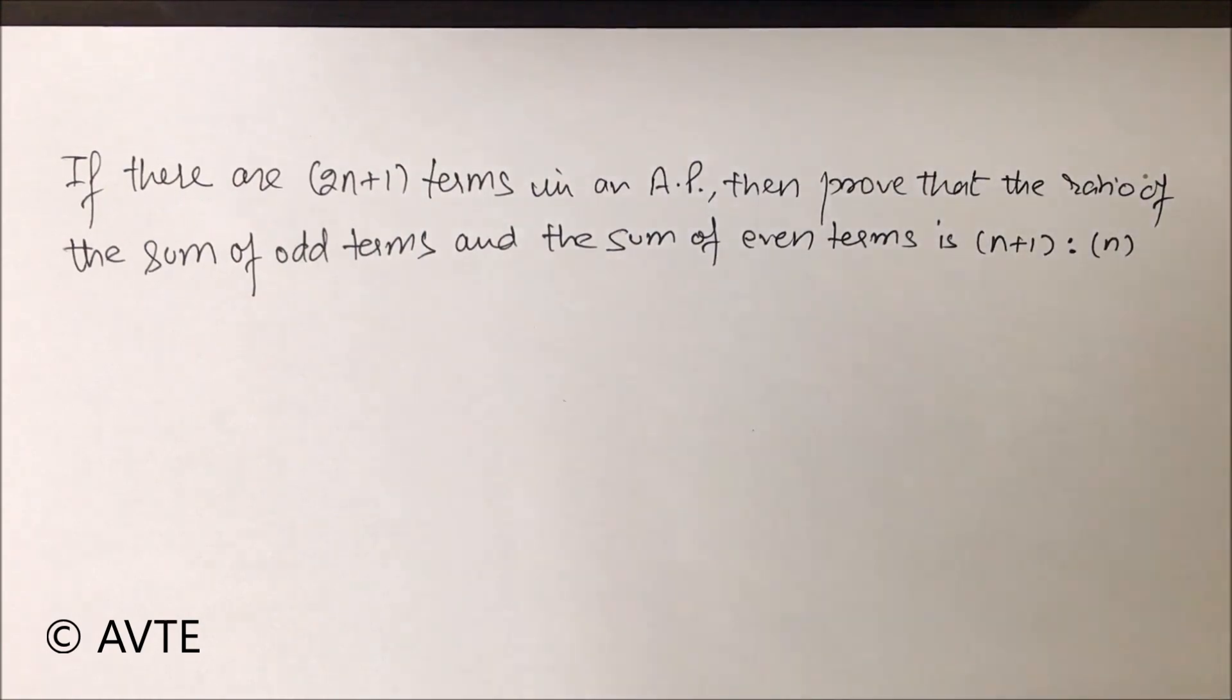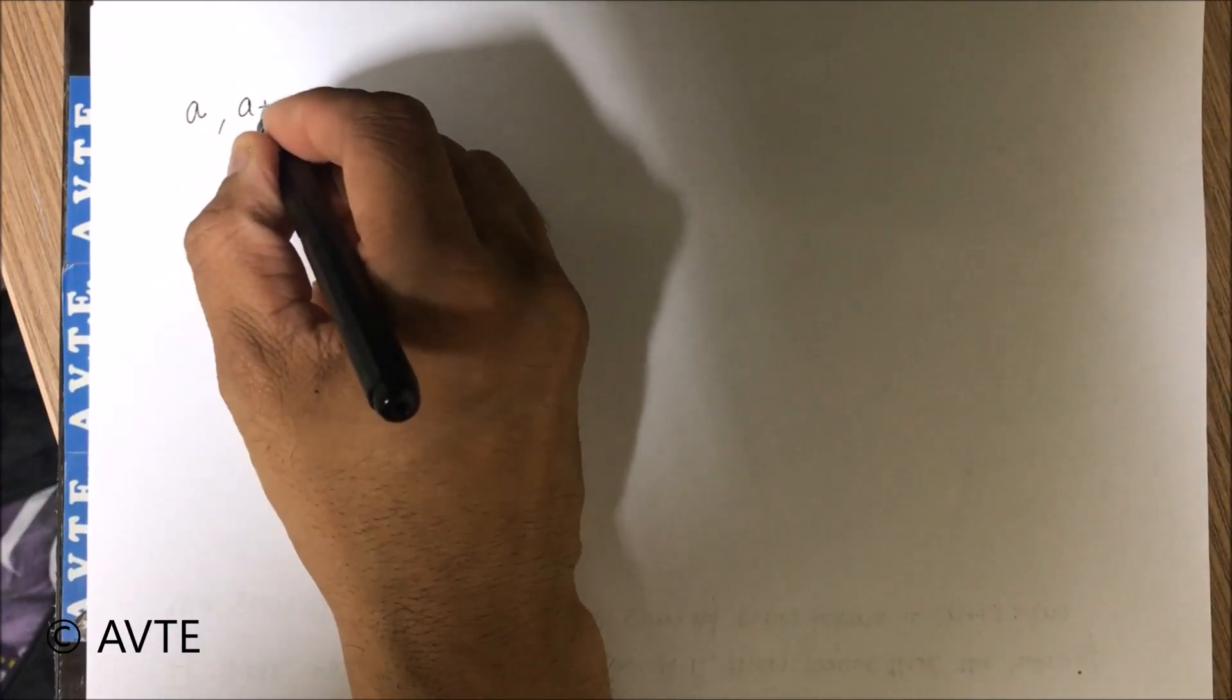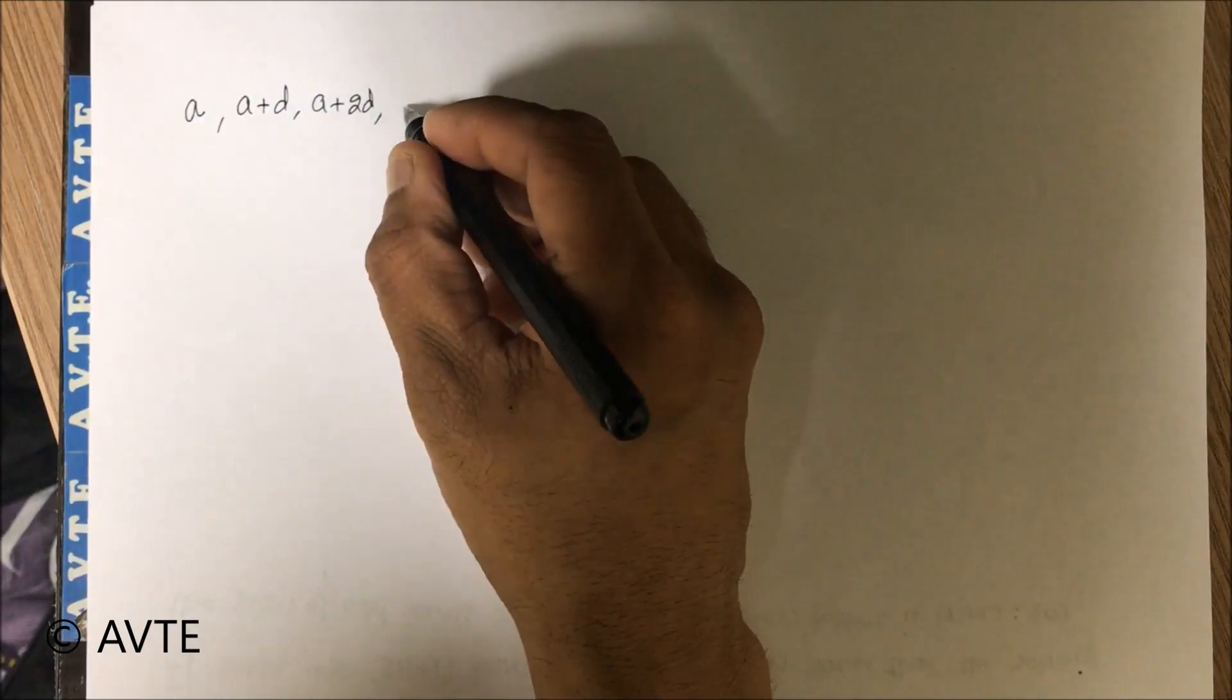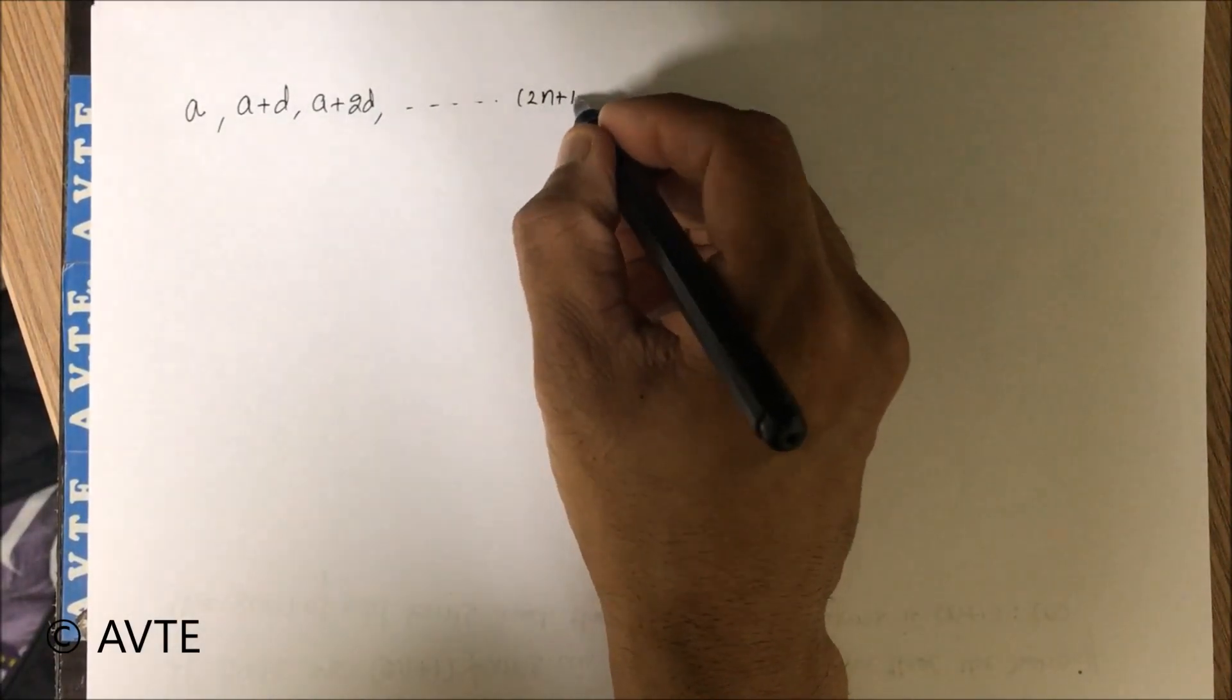So let's solve it. Taking the AP: a, a plus d, a plus 2d, up to 2n plus 1 terms.